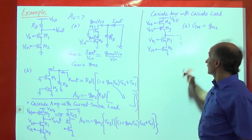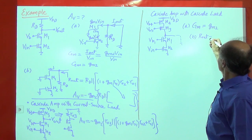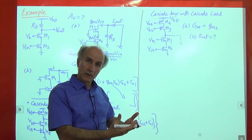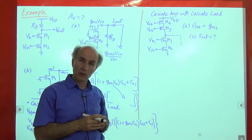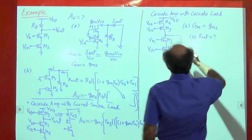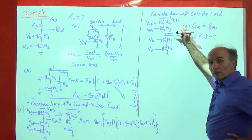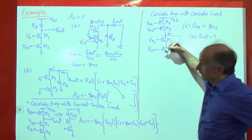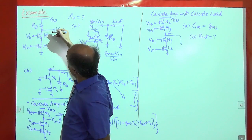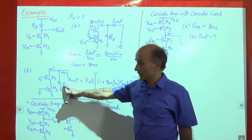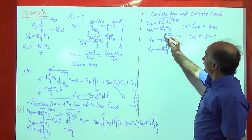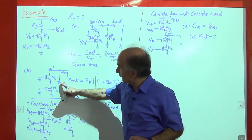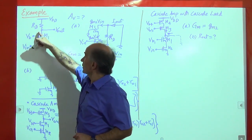For step B, we find the output resistance. Sitting at the output node, there are two branches to AC ground: one looking down into the NMOS cascode, one looking up into the PMOS cascode load. These two are in parallel, just as in the previous example where we had RD in parallel with the cascode resistance.